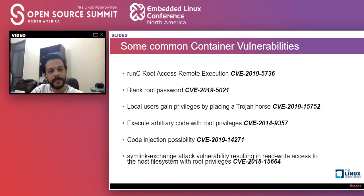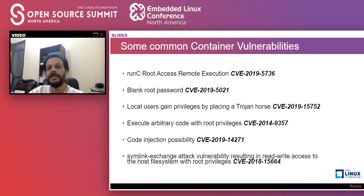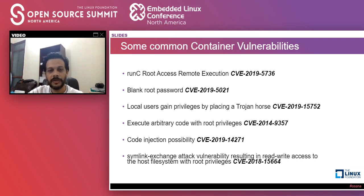Some examples of common container vulnerabilities include CVE numbers around runC root access, remote code execution, blank root passwords, local users gaining privileges by placing a trojan horse, executing arbitrary code, code injection, and read/write access to the host file system with root privileges. Some are old and some have very high threat scores in the CVE database. Make sure you are aware of all of these and are implementing recommended security best practices.